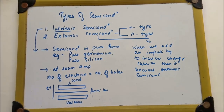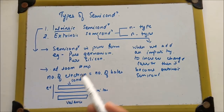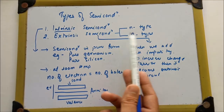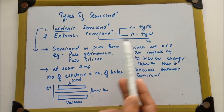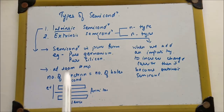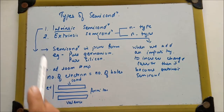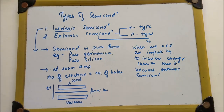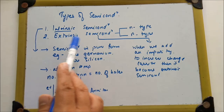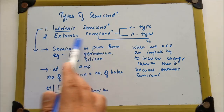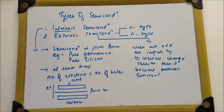So these are the two types of semiconductor: intrinsic and extrinsic. Intrinsic semiconductor is in pure form, and if we add impurity to a semiconductor it becomes the extrinsic semiconductor. In extrinsic semiconductor it is classified as n-type and p-type.